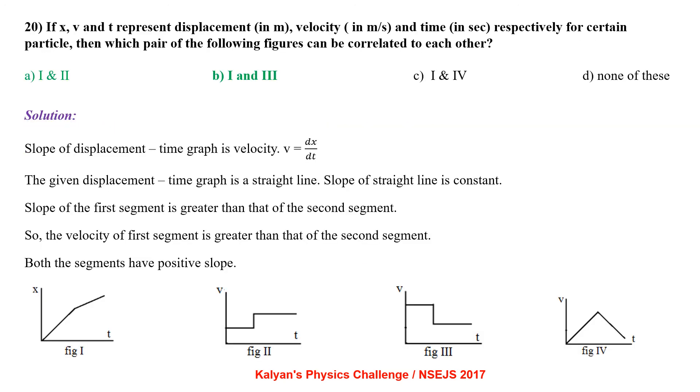If X, V and T represent displacement in meter, velocity in meter per second and time in seconds, respectively for certain particle, then which pair of the following figures can be correlated to each other. Slope of displacement time graph is velocity. V equal to dx by dt. The given displacement time graph is a straight line. So, slope of straight line is constant.